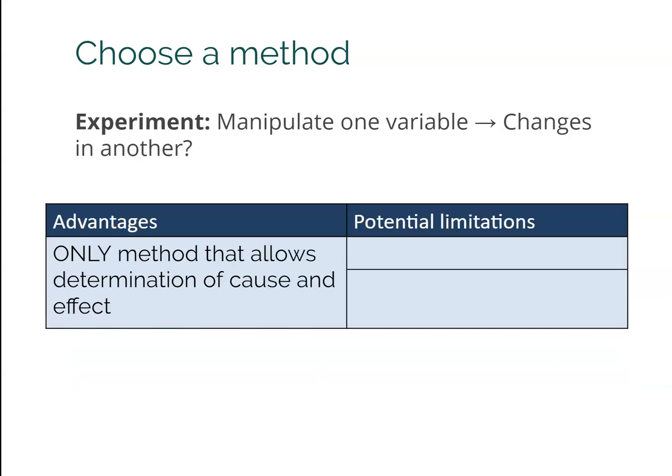Finally, the last method is experiments. The key feature that makes something an experiment is that you are manipulating one variable to see how it changes another. The reason you would do this is it is the only method that lets us definitively determine cause and effect — other methods can give us big clues, but they are not considered definitive evidence. One downside is that sometimes it's too artificial; depending on whether you're collecting data in a lab versus the real world, you have more control in a lab but it doesn't necessarily mimic real life quite as well.